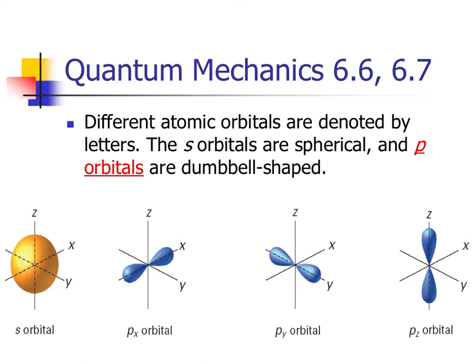Now, the P orbitals are dumbbell-shaped. The P has three orientations in space, one in the X direction, the Y direction, and Z direction. They have three orientations in space. They call them the dumbbell shape because it looks like they are dumbbells.